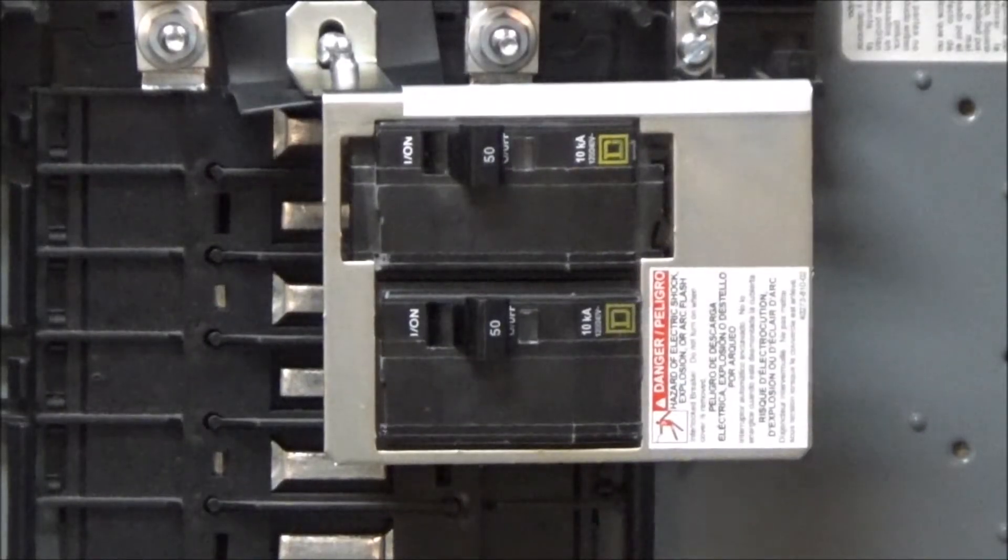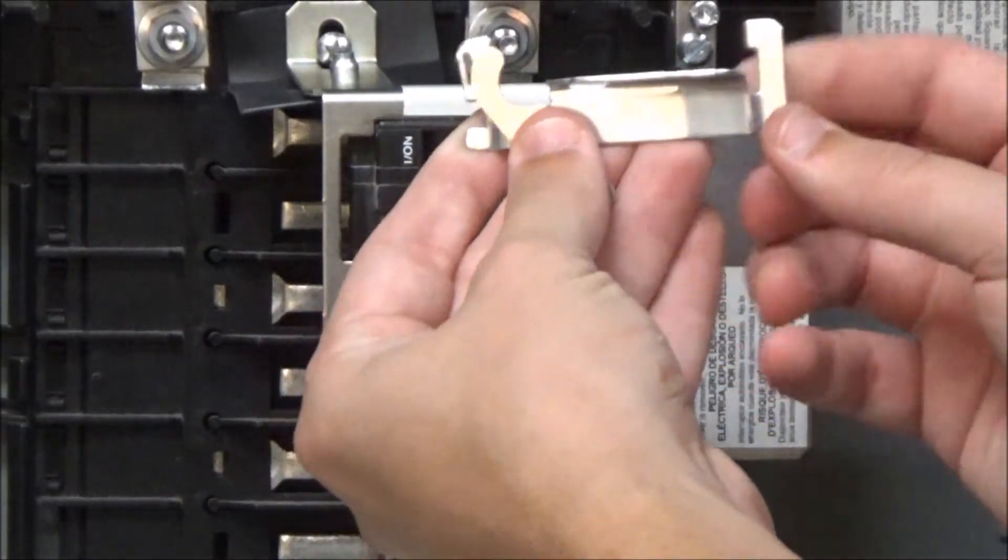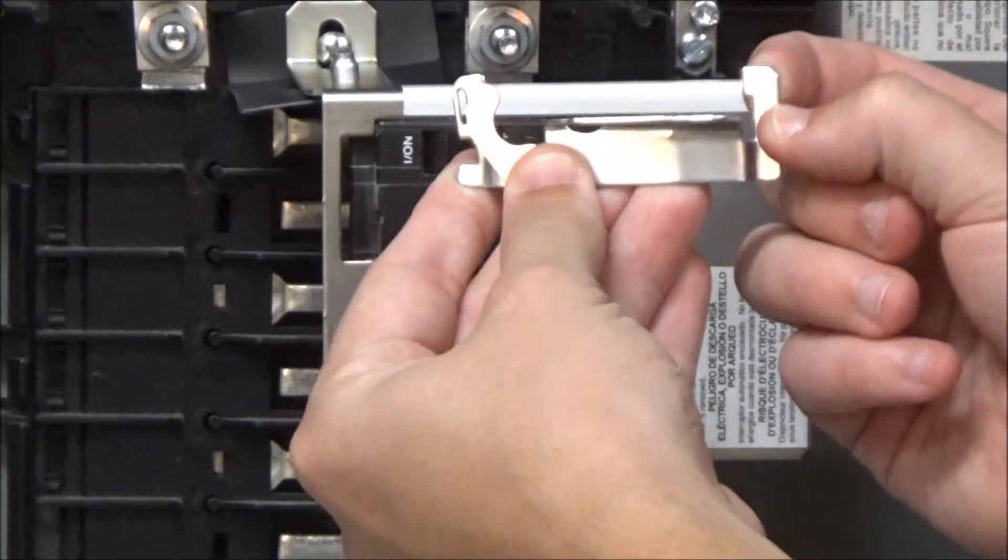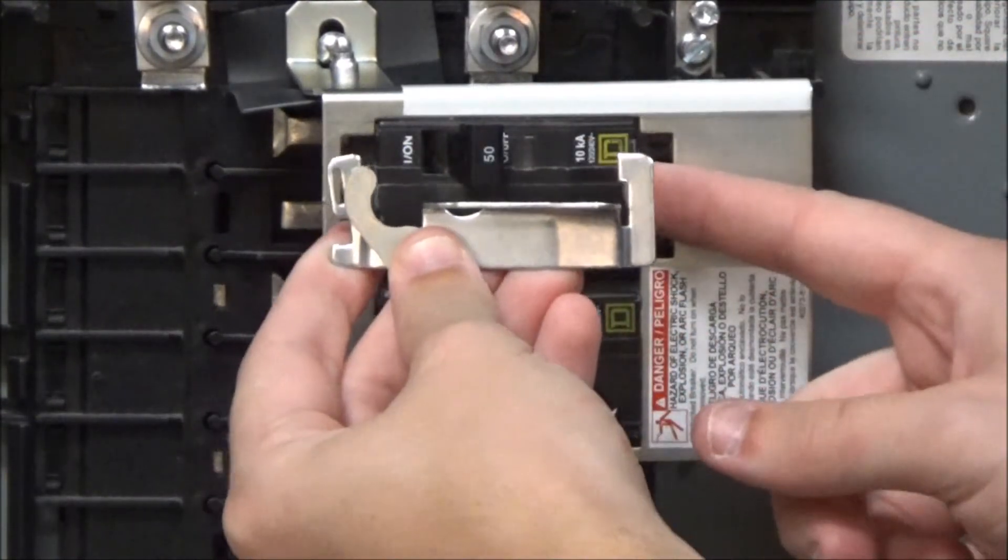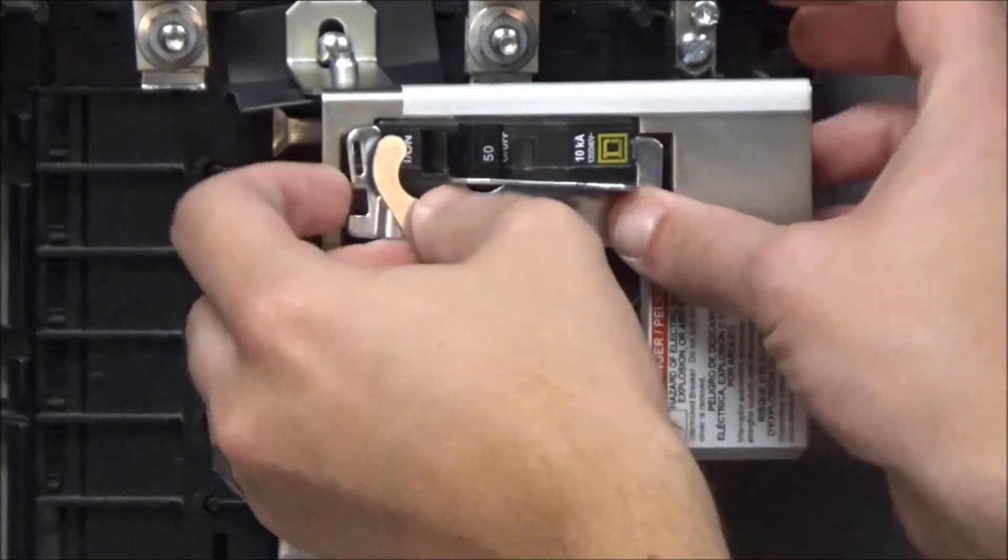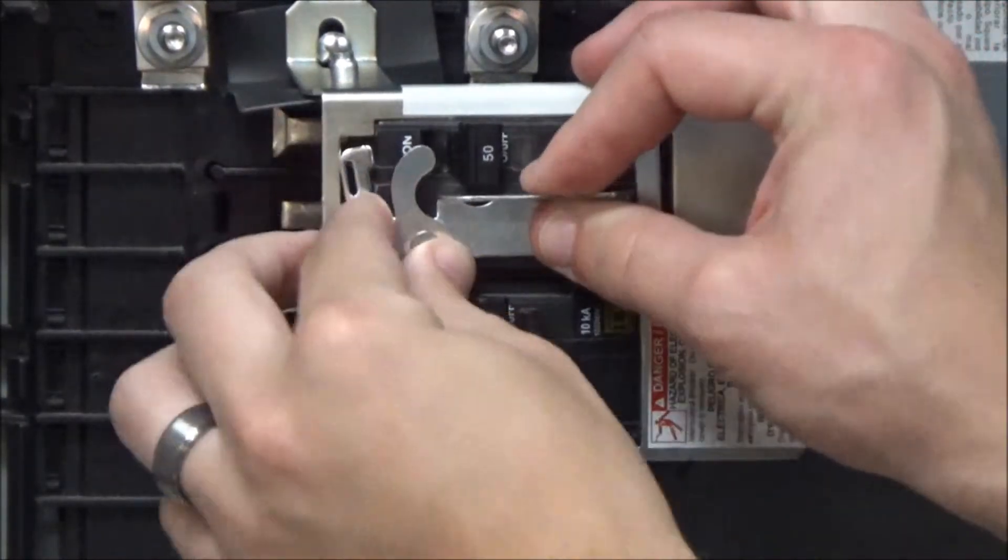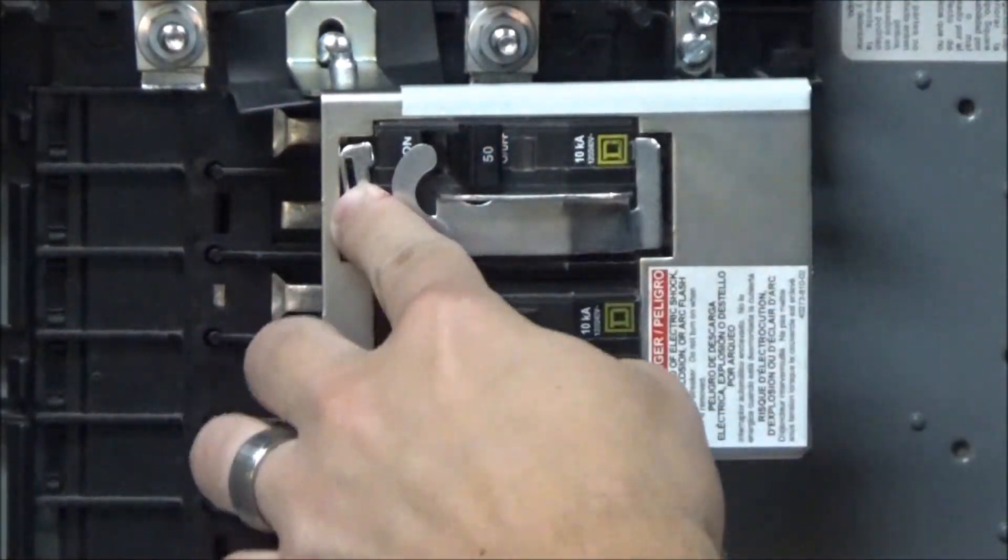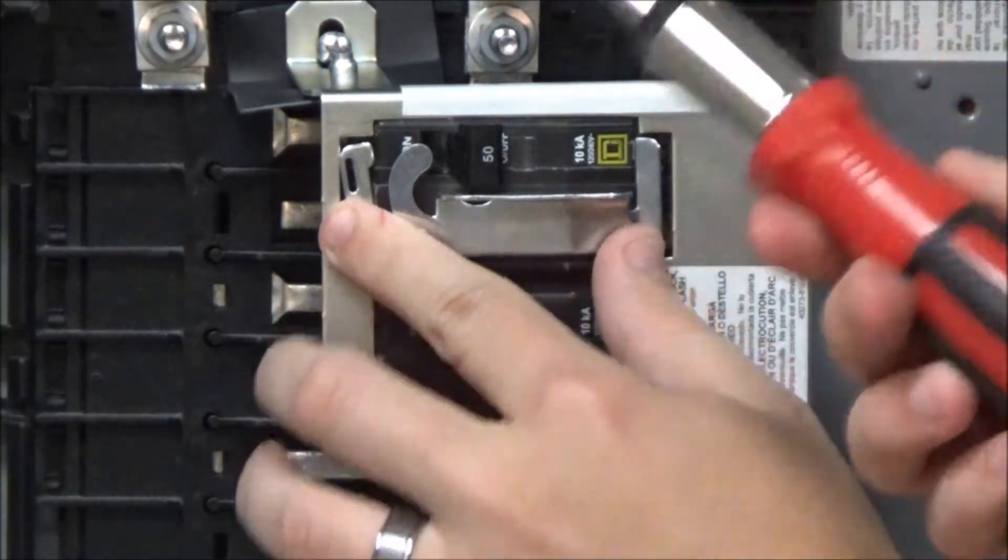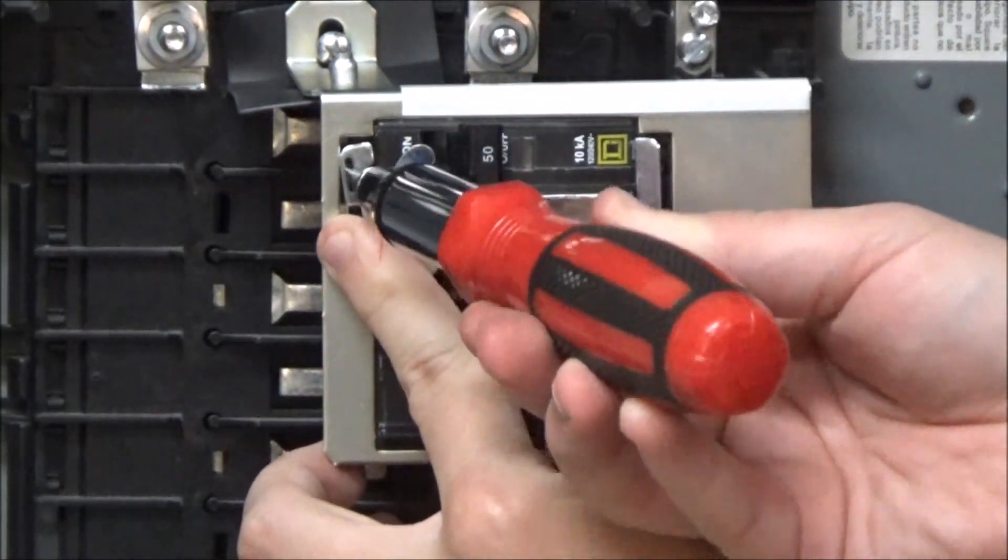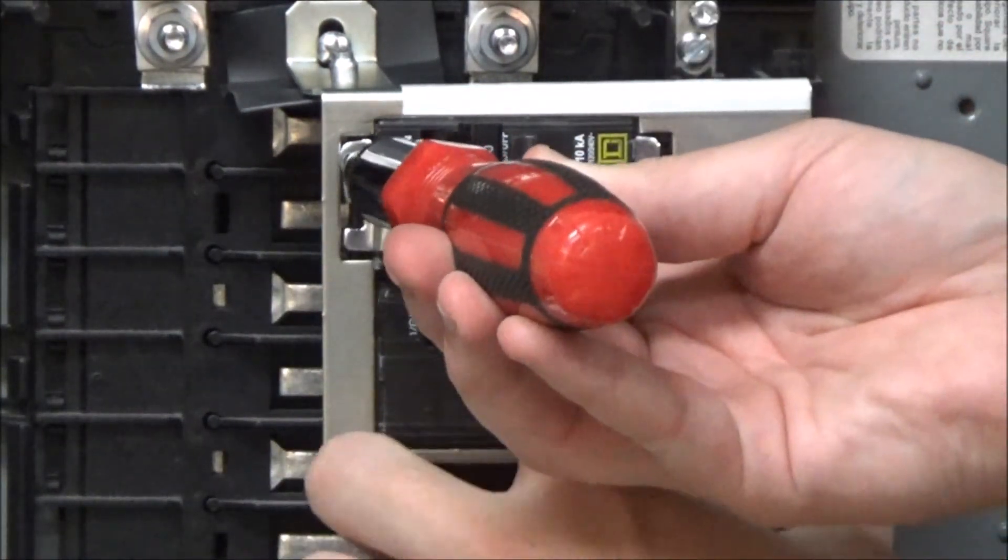The second piece is the interlock piece, which you'll install by sliding this tab into this slot on the top breaker, and then using a flat head screwdriver to bend this tab into the slot on this end of the breaker.